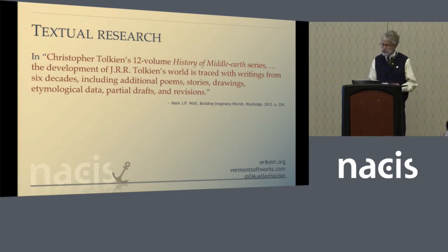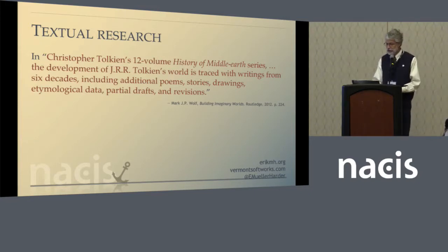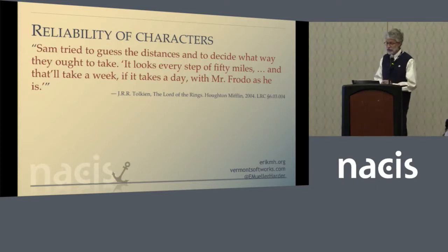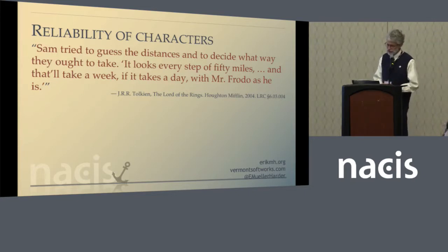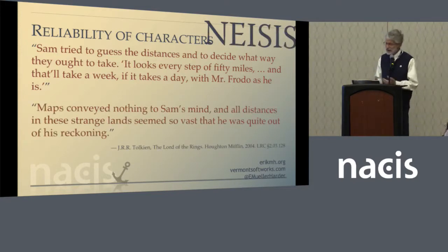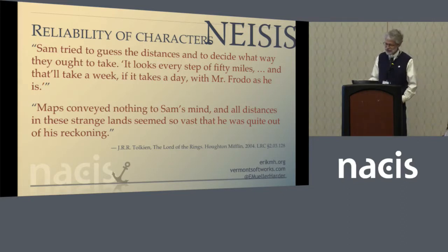The History of Middle Earth traces all of this with writings from six decades, including additional poems, stories, drawings, etymological data, partial drafts, and revisions. Another difficulty is that Tolkien, quite properly, made different characters' observations more or less reliable. We might think that Sam — salt of the earth as he was — was pretty good with distances. But Tolkien, as narrator, says right in the book that maps conveyed nothing to Sam's mind, and all distances in these strange lands seemed so vast that he was quite out of his reckoning. So we cannot just blithely state that a piece of information is accurate simply because it is given within one of the novels, and that's doubly true of his drafts.